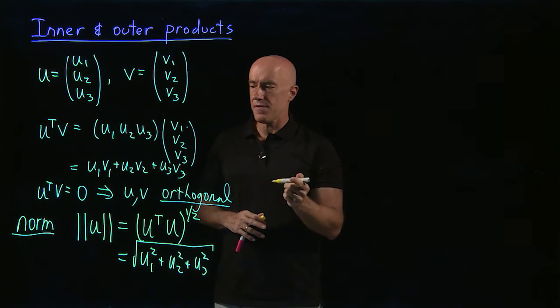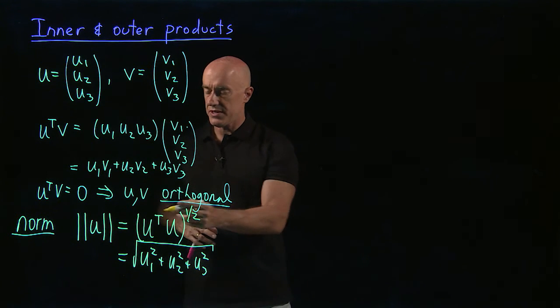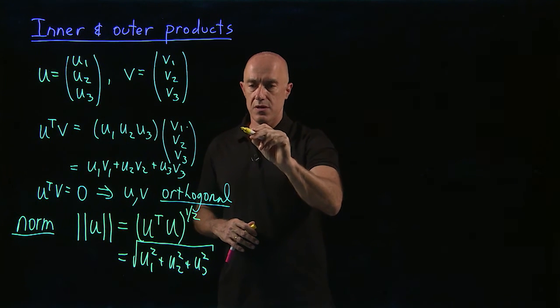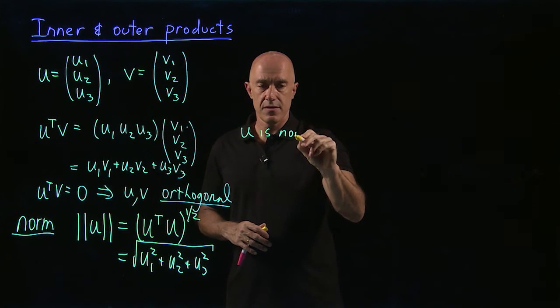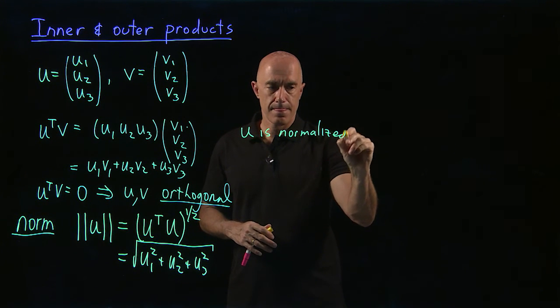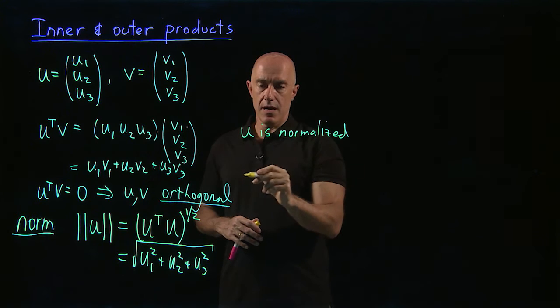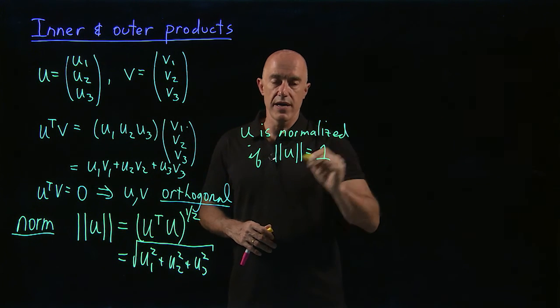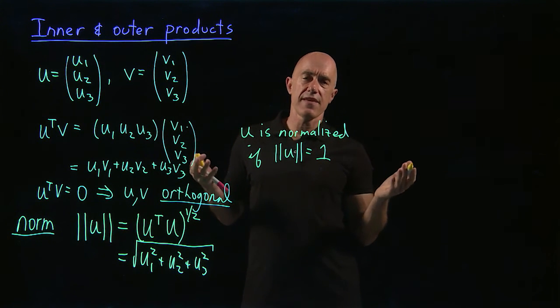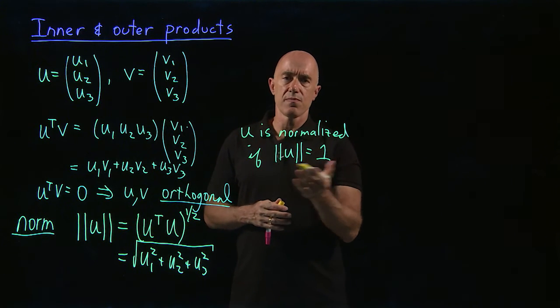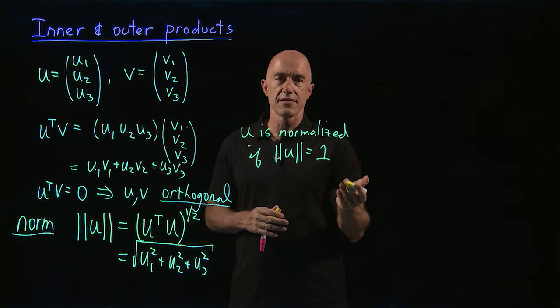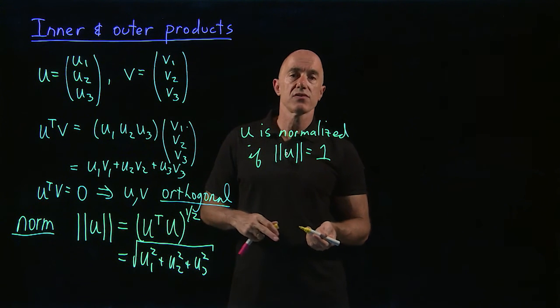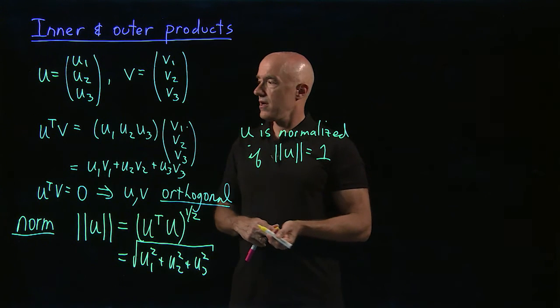One more word we use. We say that u is normalized if the norm of u is equal to one. So we say vectors are normalized if their norms are one. So usually you do that. You normalize a vector by dividing by the norm of the vector. Then the vector is normalized.